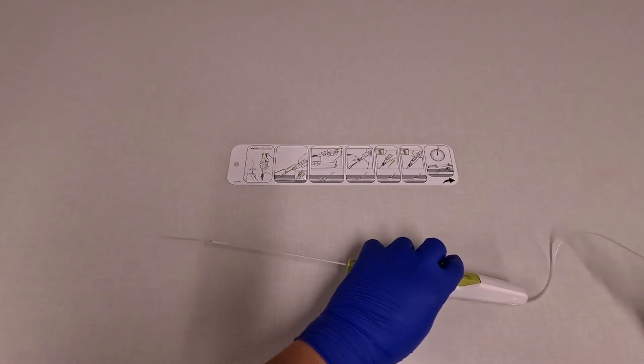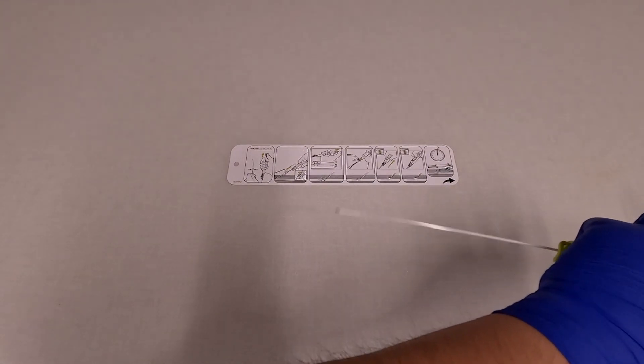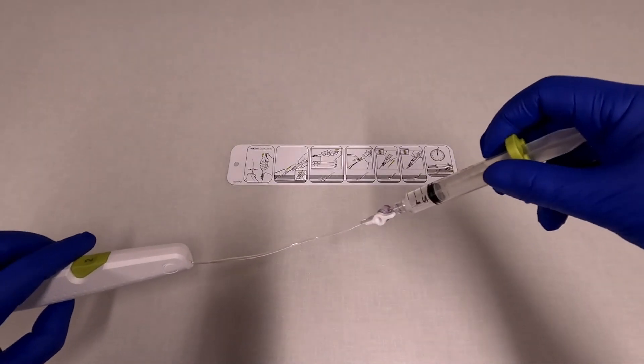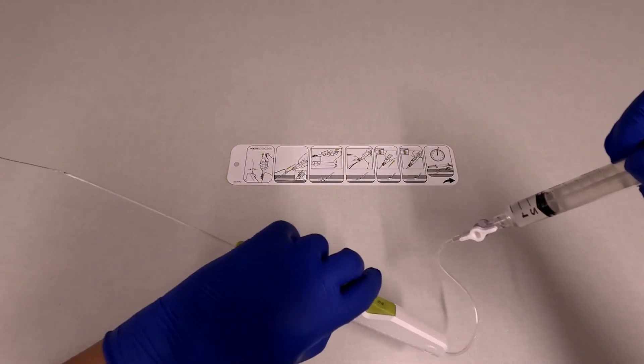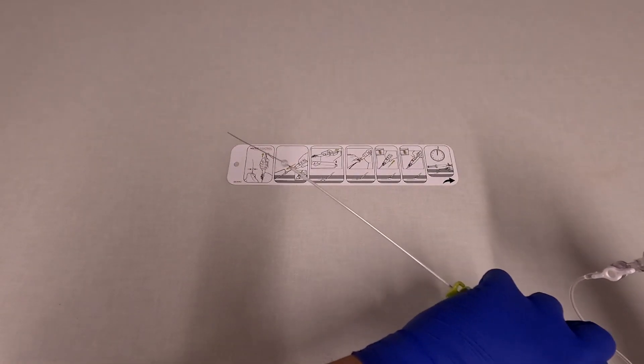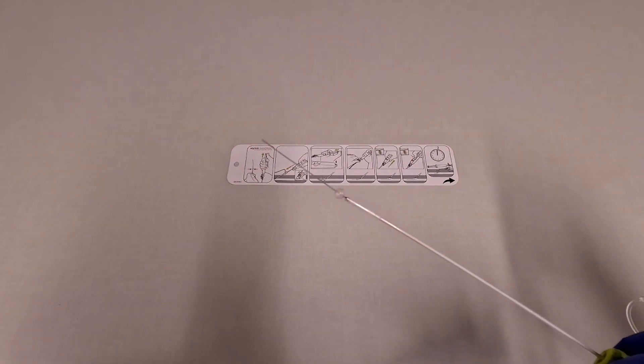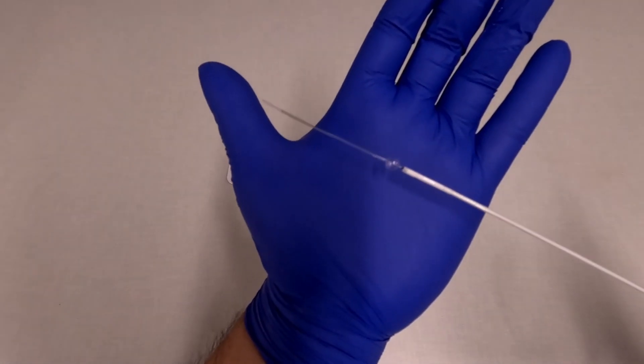The first step is to test the device. So you're going to look at the tip and then while the stopcock is open, you're going to push down on the syringe to see if the balloon fills. You can see it fill here.